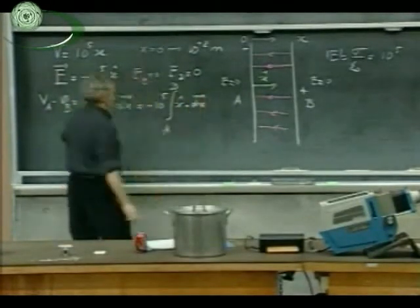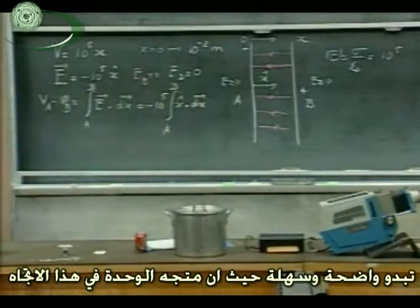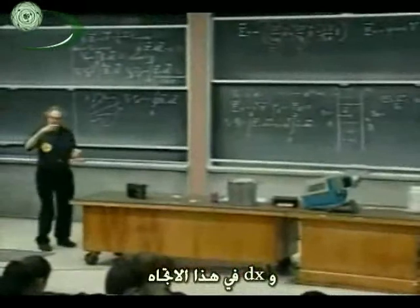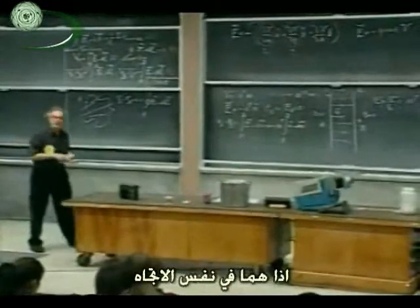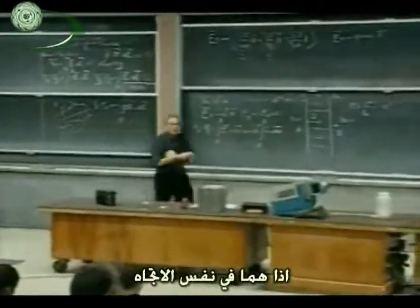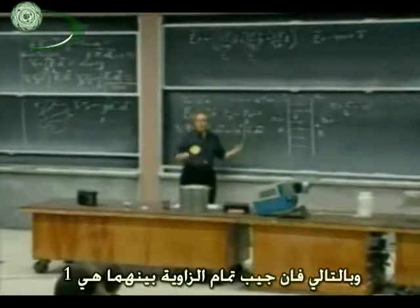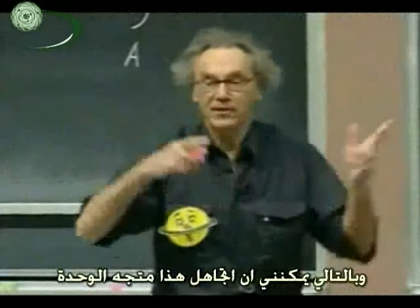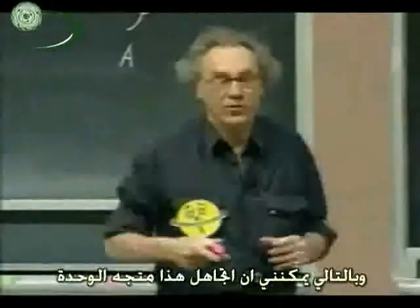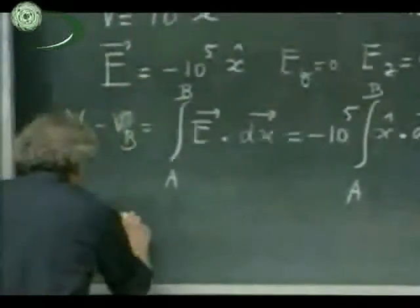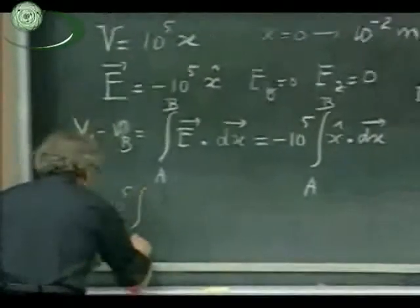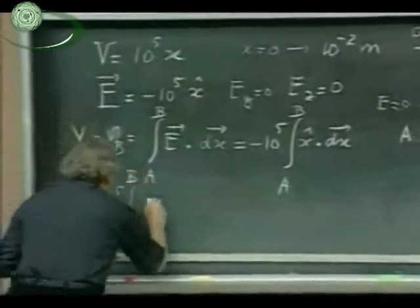This is minus 10^5 times the integral going from A to B of dX. It looks scary but it is trivial. X-hat is the unit vector in this direction, and dX is the little vector dX in this direction. So they are both in the same direction, so the cosine — the angle between the two — is one. So I can forget about vectors and forget about the dots.